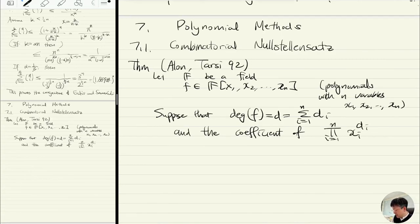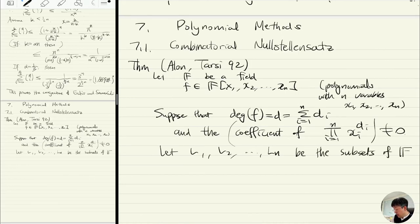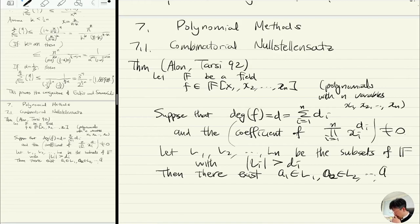Let L1, L2, ..., Ln be the subsets of F with size of Li bigger than Di. Then there exist assignments a1 in L1, a2 in L2, ..., an in Ln such that when you evaluate this polynomial, it's going to be nonzero.